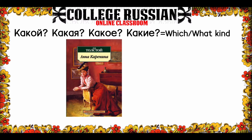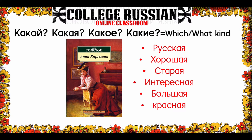Следующее. Что это? Это книга. Какая книга? Это маленькая книга или большая? Это американская книга или русская книга? Это интересная книга или неинтересная книга? Some ideas of adjectives you might use: это русская книга, хорошая книга, старая книга, интересная, большая, красная.